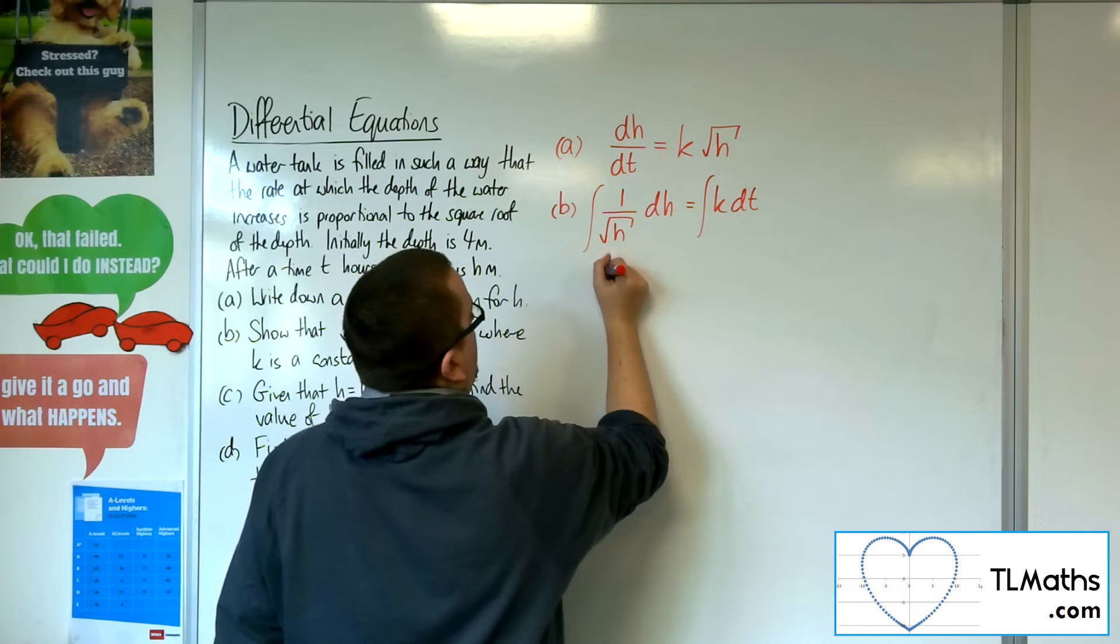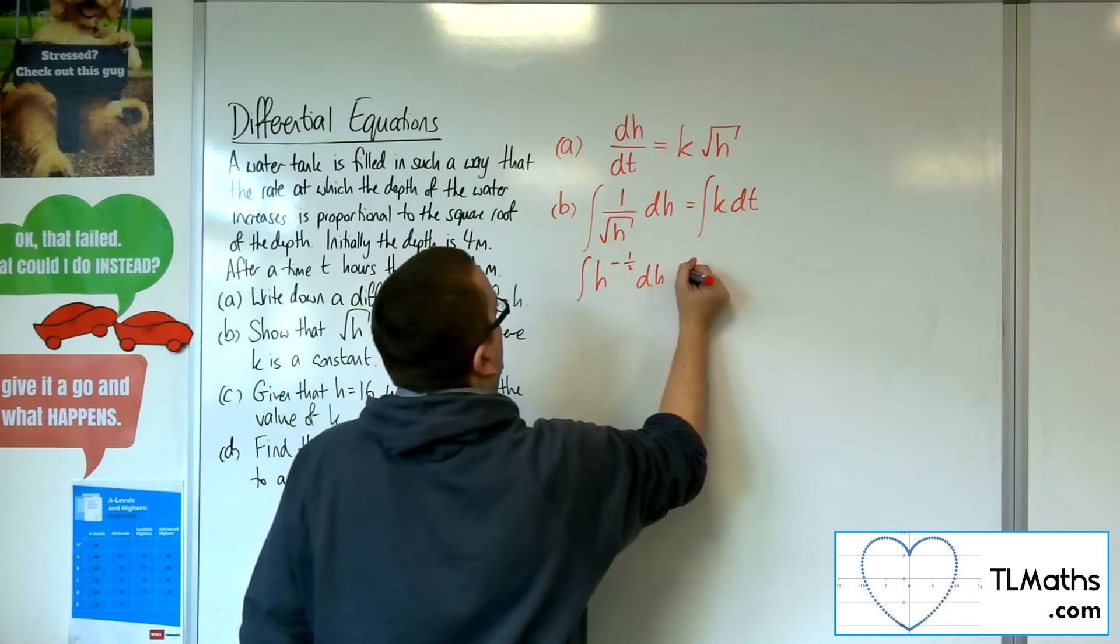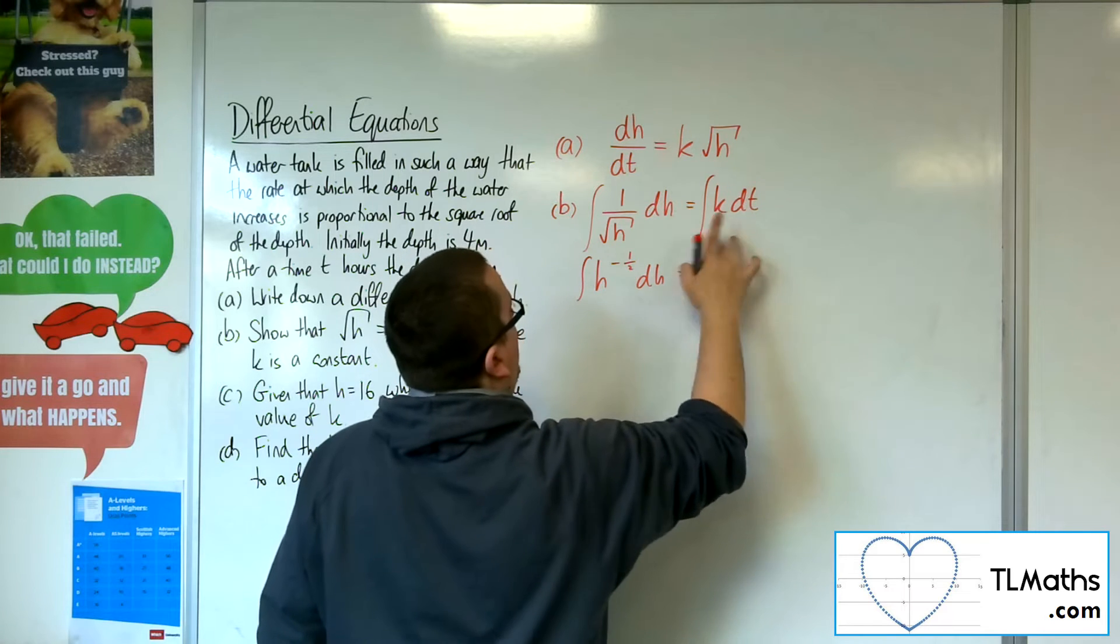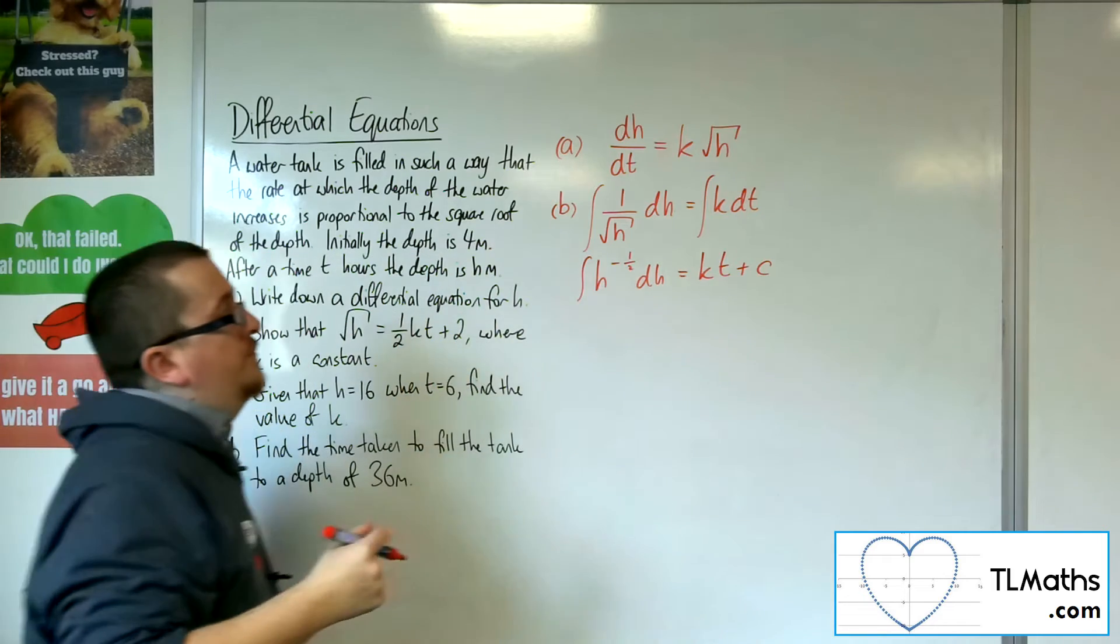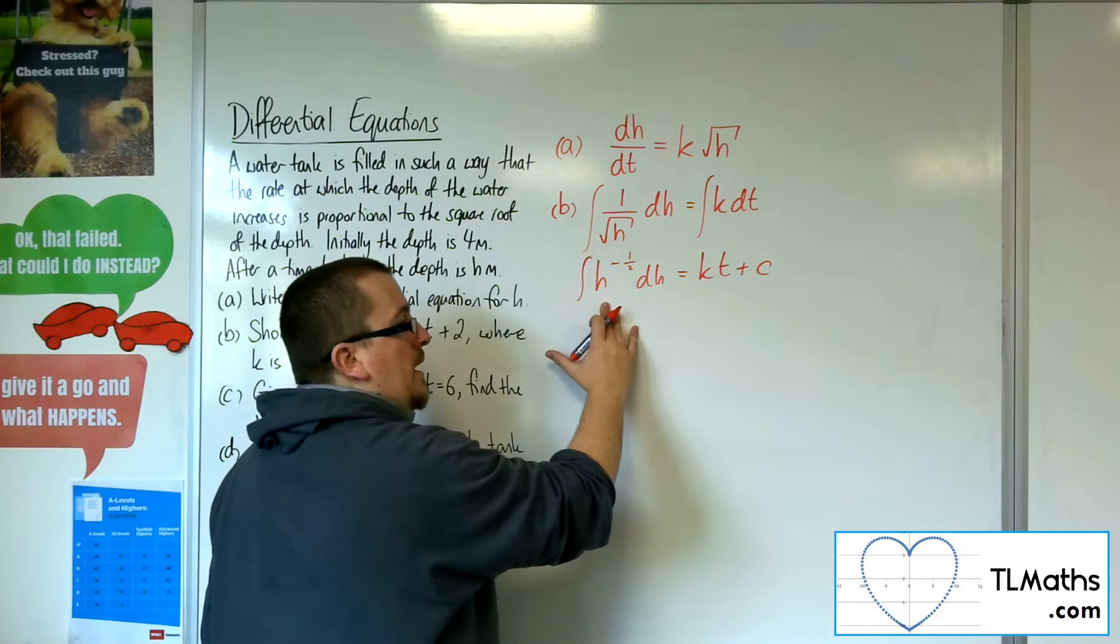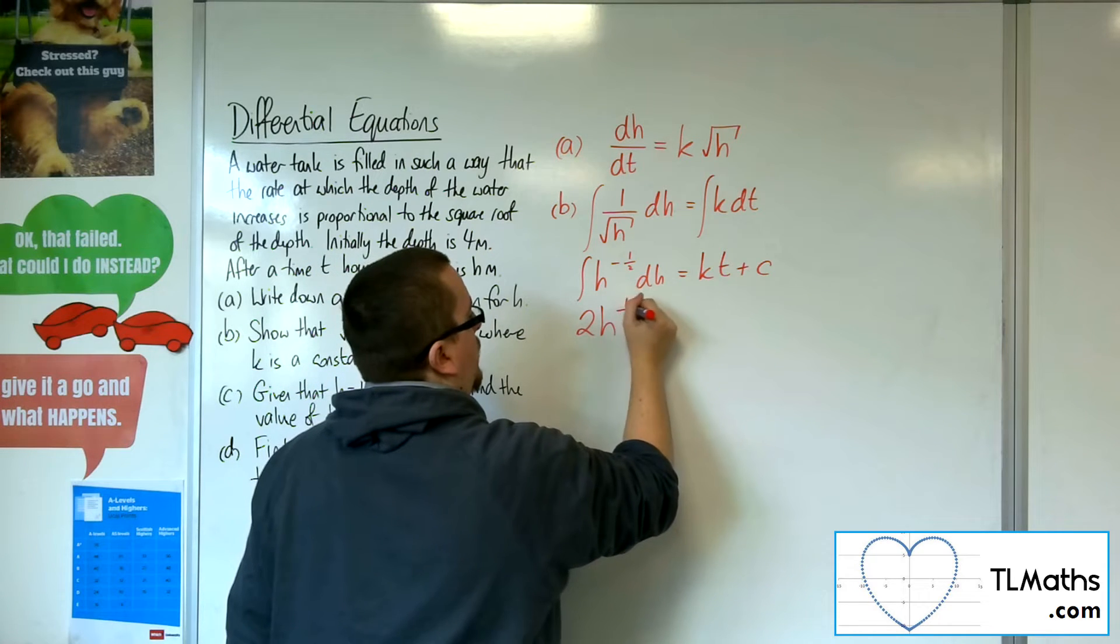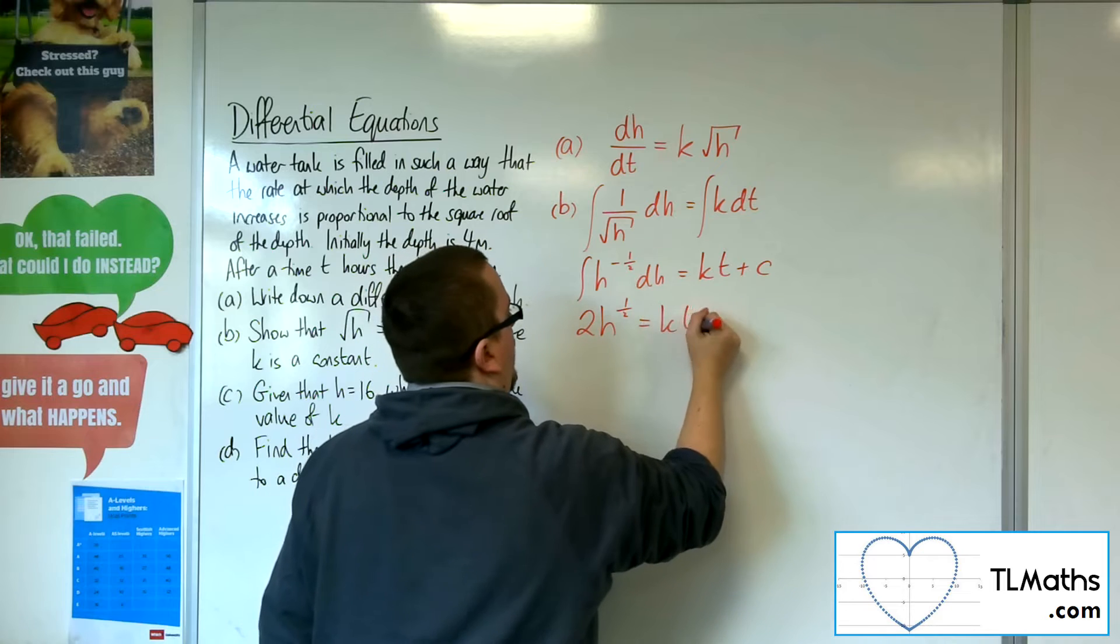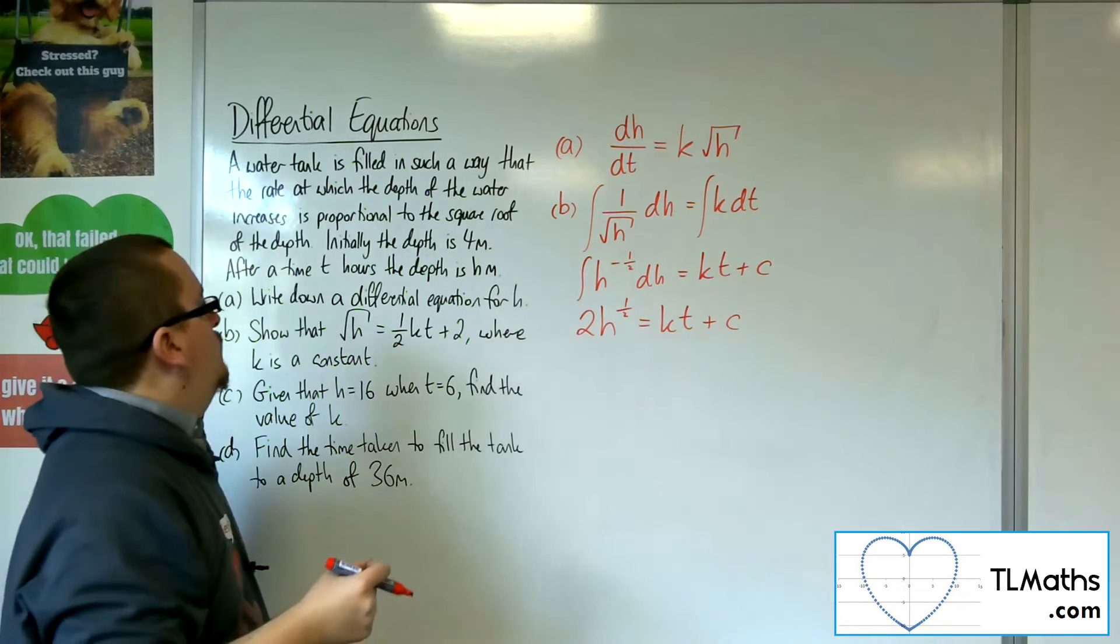Now the 1 over root h is h to the minus 1 half. The right-hand side can integrate to kt plus c. Now h to the minus 1 half will integrate, add 1 to the power, divide by the new power, to 2h to the half. So there is my general solution.